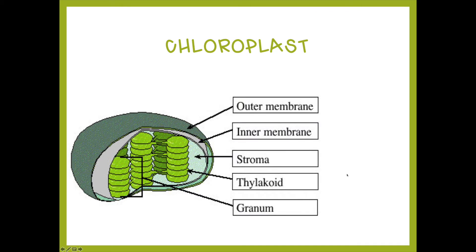Here is the structure of the chloroplast — you need to understand the different components. Take a look at the figure on your paper and on the screen. The chloroplast is a double membrane structure, so it has an outer membrane and an inner membrane. Just like a cell has cytoplasm, the chloroplast has stroma — that's the jelly-like substance inside the chloroplast, analogous to cytoplasm in a cell.